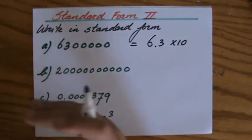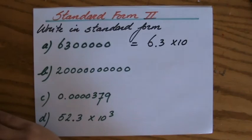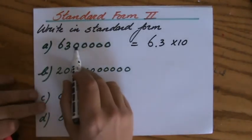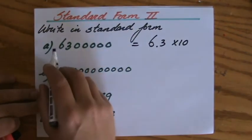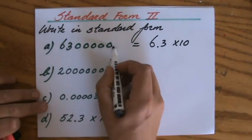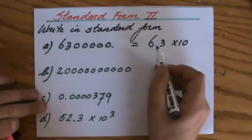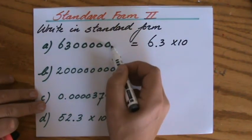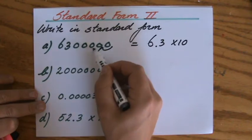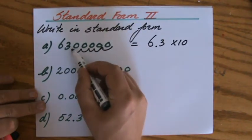I take a moment to carefully count the amount of places my decimal point moved. Initially, where's my decimal point? It is here. In my standard form it is between the six and the three. So how many places did it move? One, two, three, four, five, six places. So times ten to the power six.